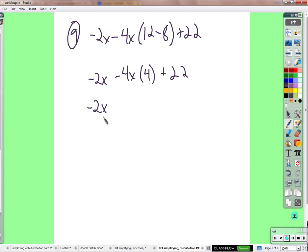So negative 2x, negative 4x times 4 is negative 16x. Negative 2x minus 16x is negative 18x, and that's your 22.